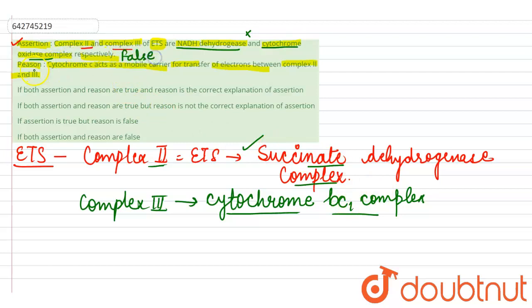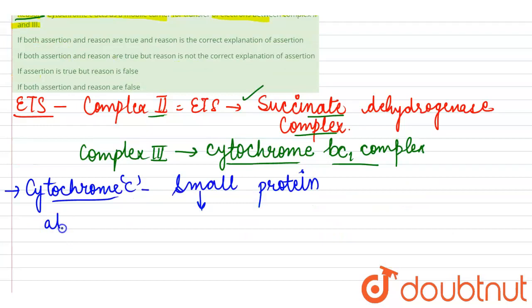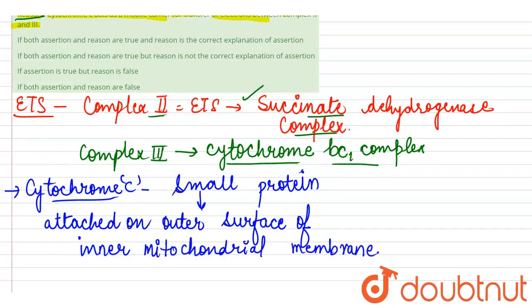Now analyzing the reason: cytochrome c is basically a small protein that remains attached to the outer surface of the inner mitochondrial membrane.